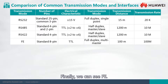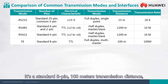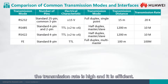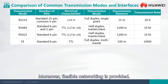Finally, we can see FE. It's a standard 8-pin interface with 100 meter transmission distance and 100 megabits per second rate. It has some advantages: the transmission rate is high and it is efficient. Moreover, flexible networking is provided. However, the networking cost is high.